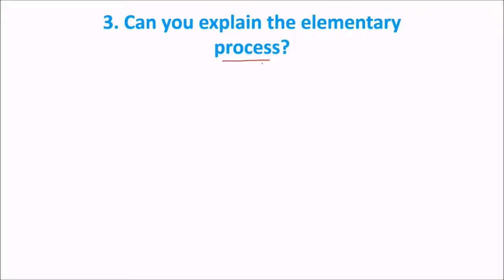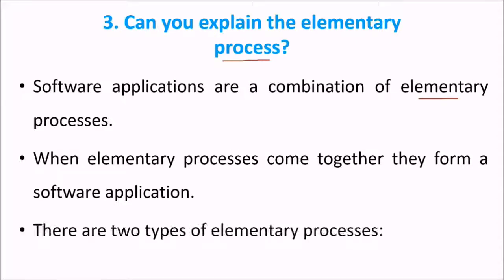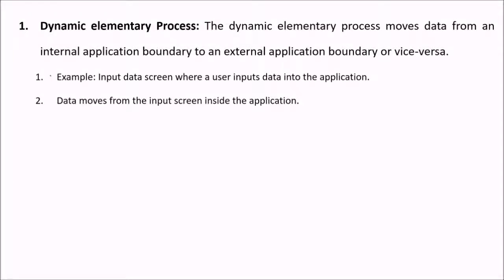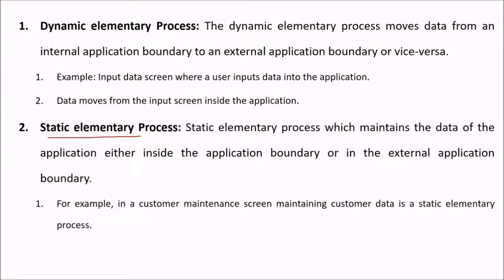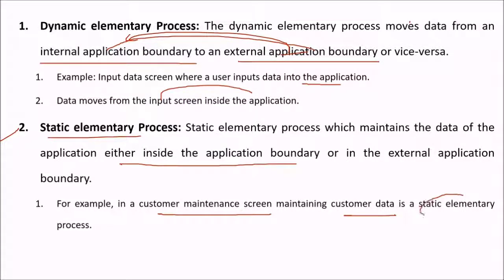What is an elementary process? There are two types: dynamic elementary process and static elementary process. The dynamic elementary process moves data from one internal application boundary to an external application boundary and vice versa — for example, an input data screen where the user inputs data into the application. The static elementary process maintains data either inside the application boundary or in the external application boundary — for example, a customer maintenance screen maintaining customer data.